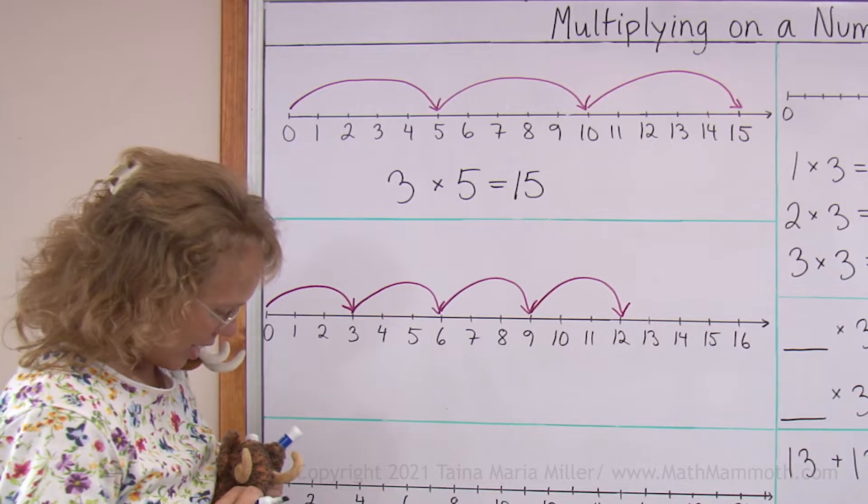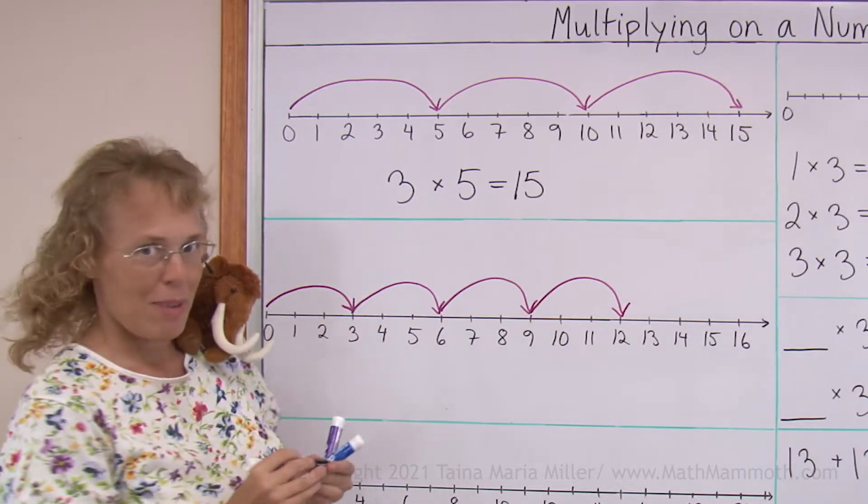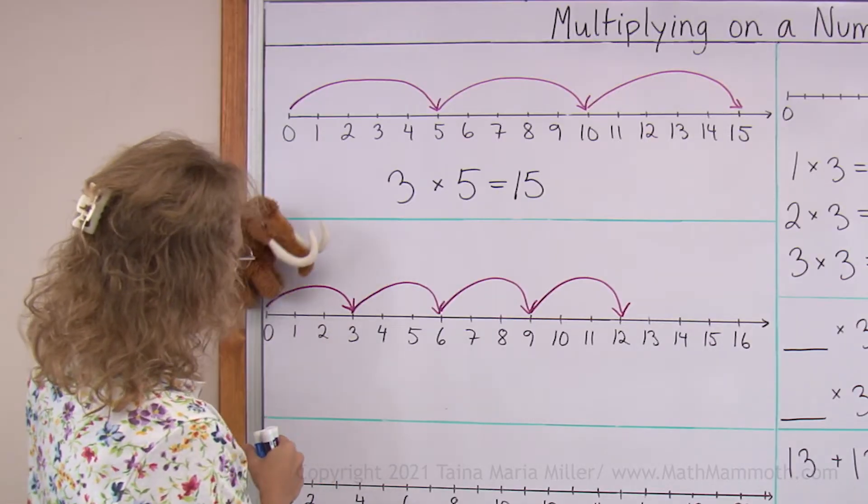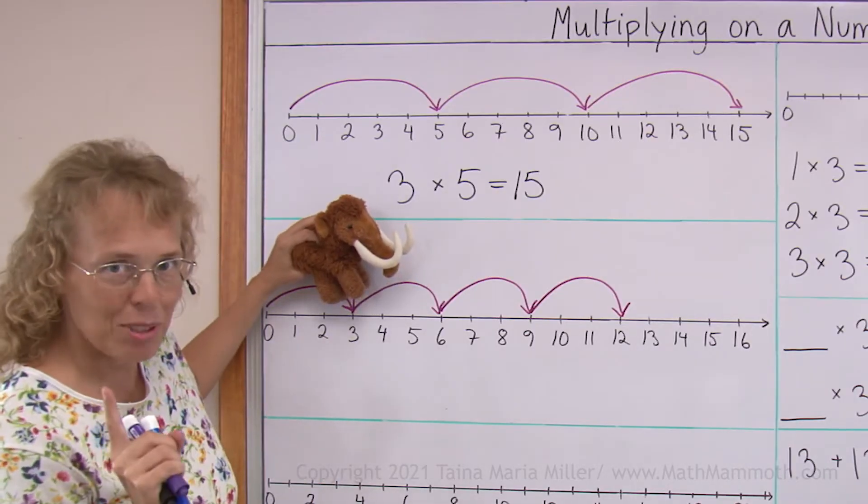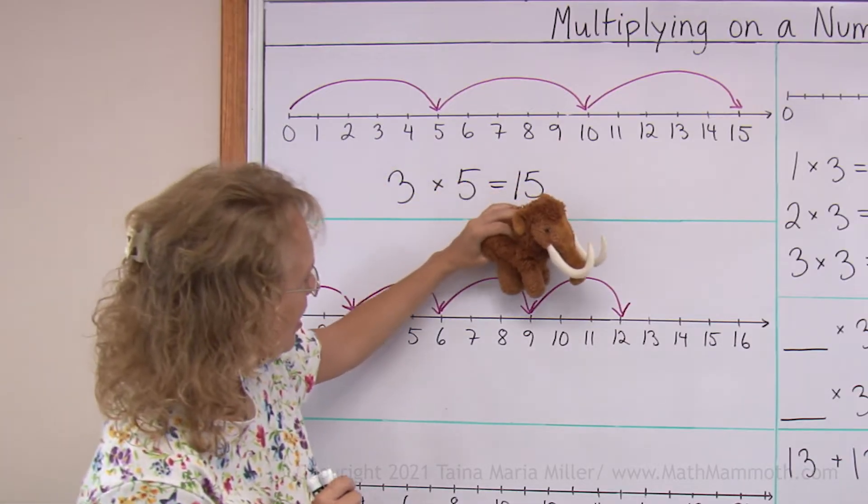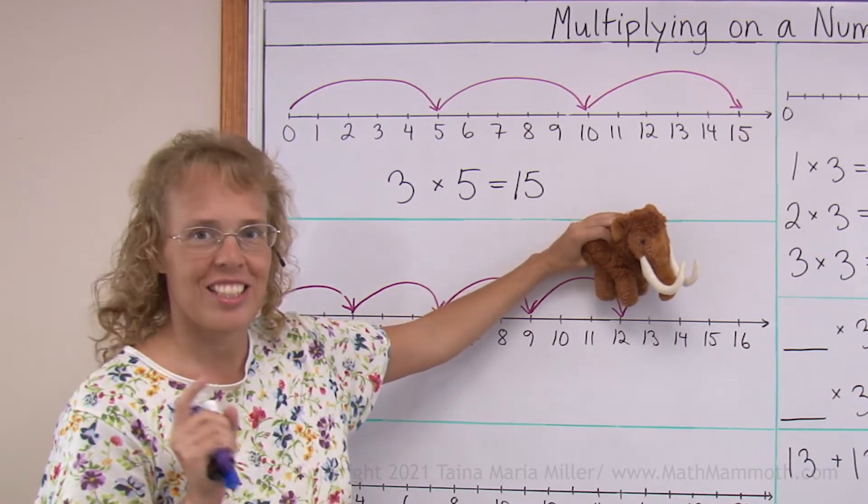Okay, Giganto, thank you, you can now go. Now it's Mathie's time to jump. That one is three steps long, right? Another three and he lands at six, another three he lands at nine, and yet another three and he lands at twelve.